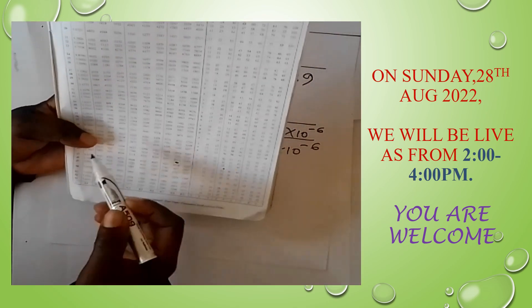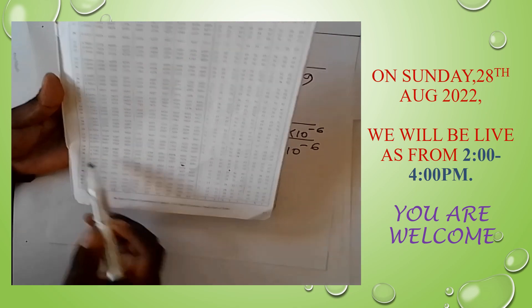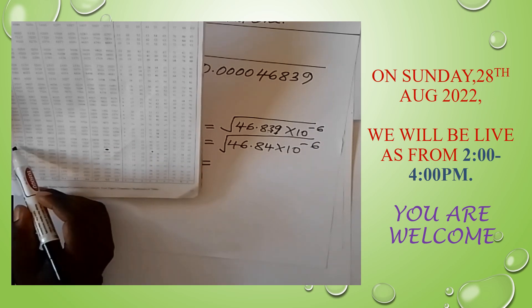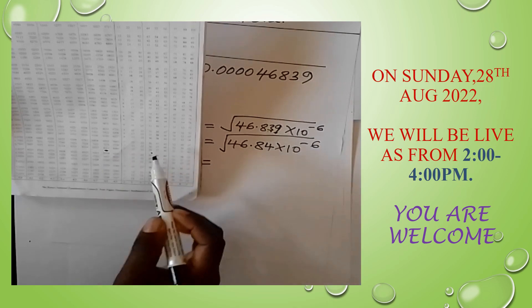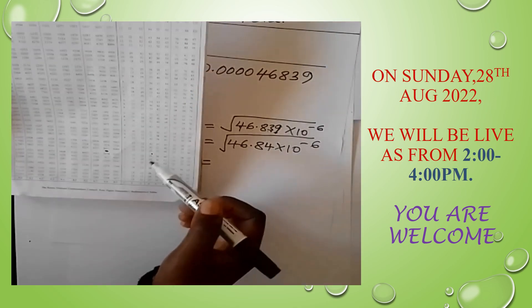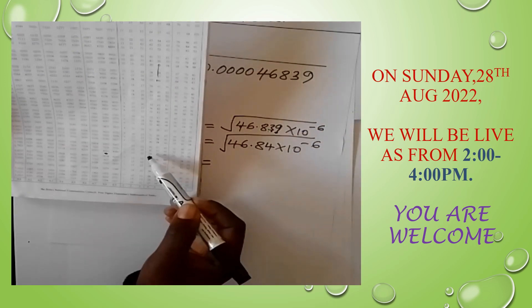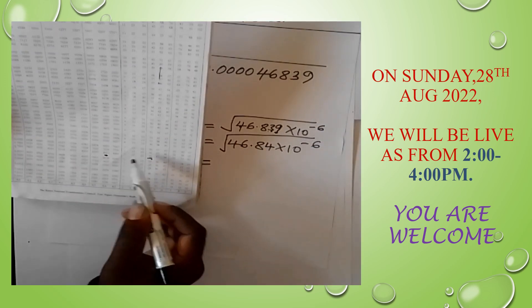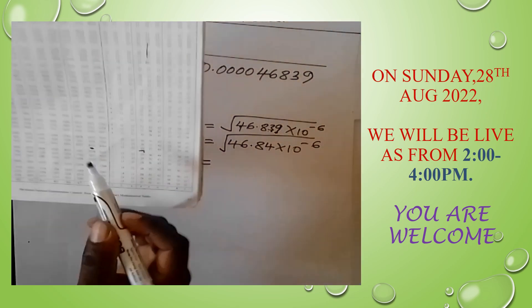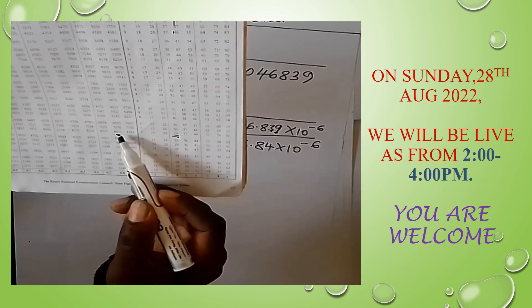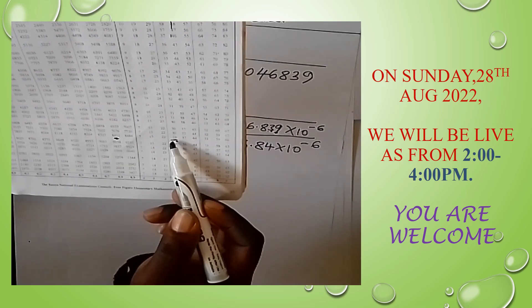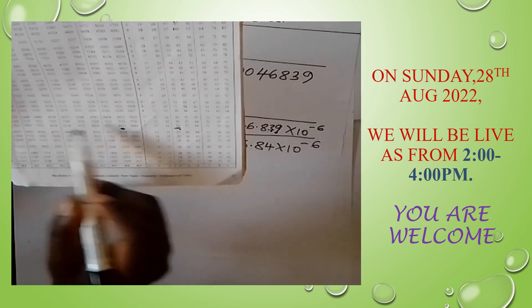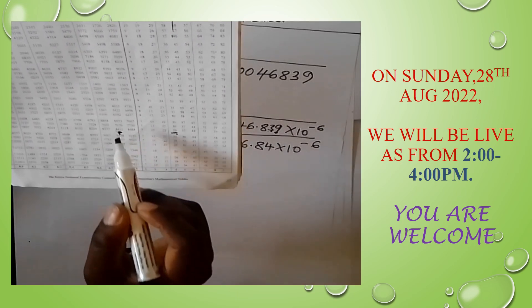In our tables, we look for 46 in the first column and 0.8 under column 8. We get 6.8411. Then we look for 4 in the difference column and find 29. We take that 29 and add it to 11, giving us 40. Therefore from our tables, the square root of 46.84 is 6.8440.